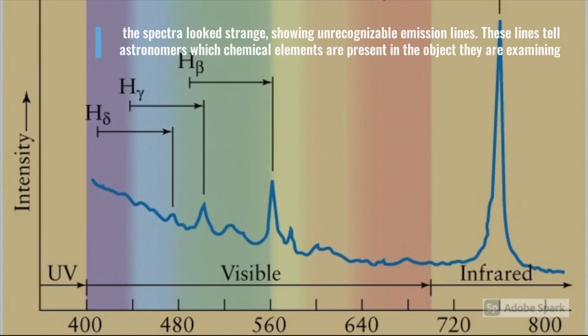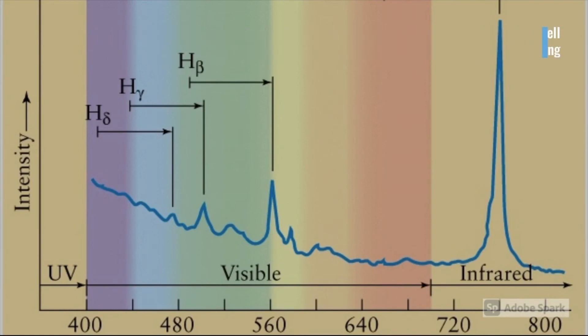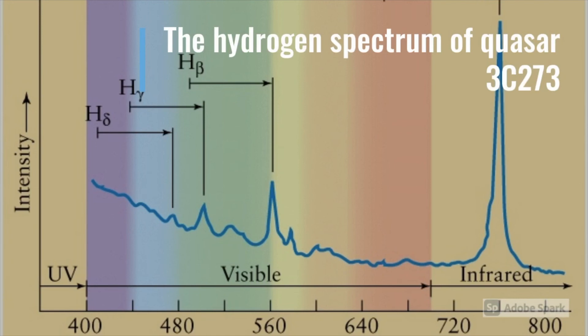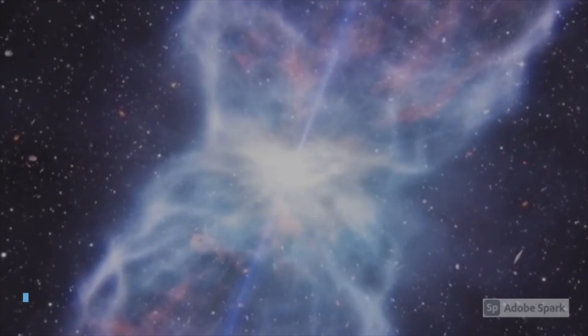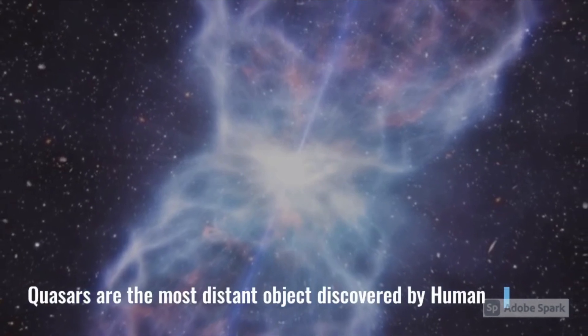These observations also let them obtain their spectra, and again that spectra looked very strange, showing unrecognizable emission lines. These lines tell astronomers which chemical elements are present in the object they are examining, but for the quasar, the spectral lines were nonsensical, seeming to indicate elements which they were not aware of.